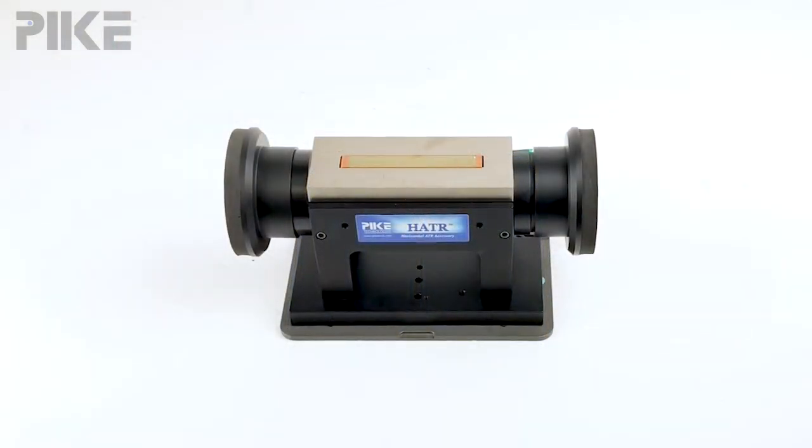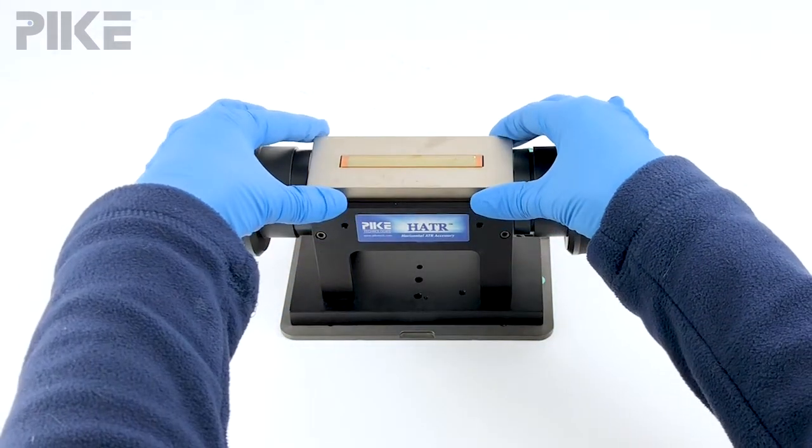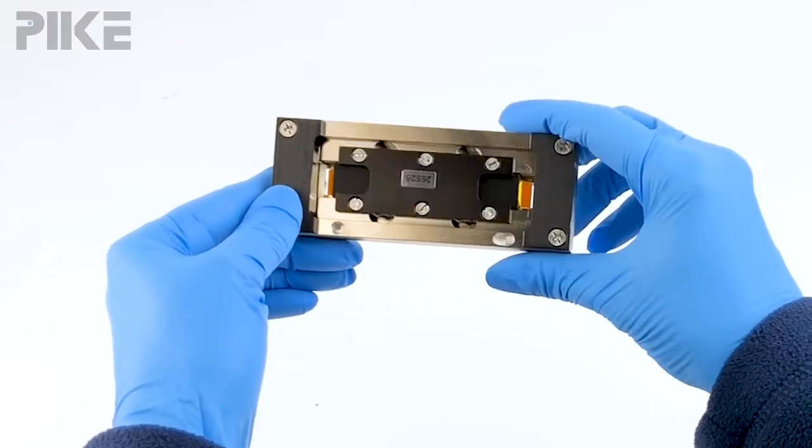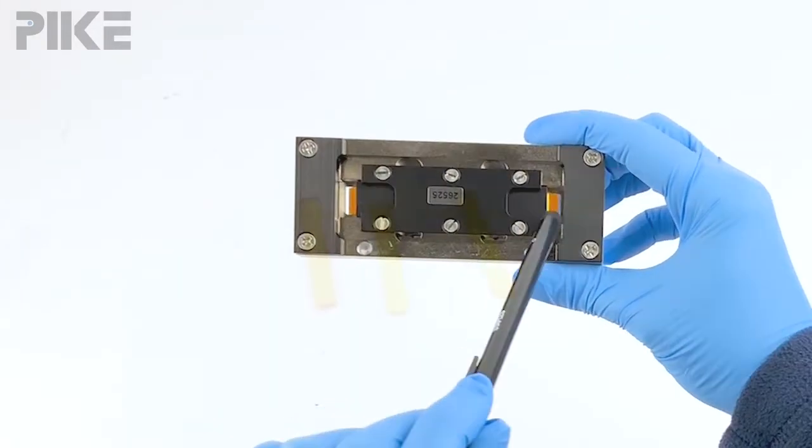To determine the number of reflections of your HATR plate, the first thing you'll do is remove the ATR plate from the base. Next, flip it over and we're going to look at the ends of the crystal.